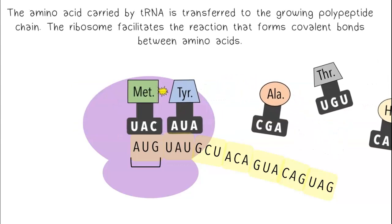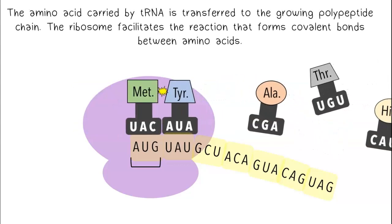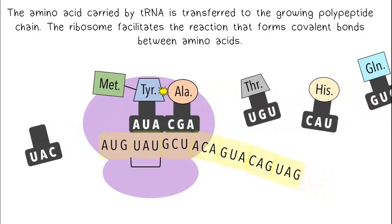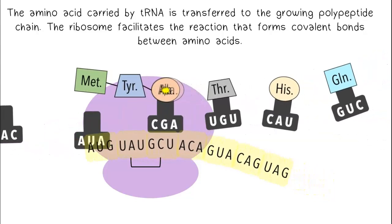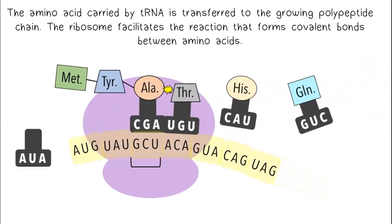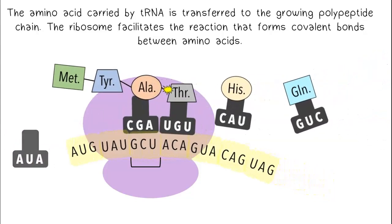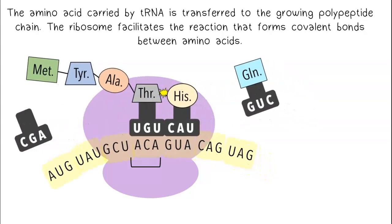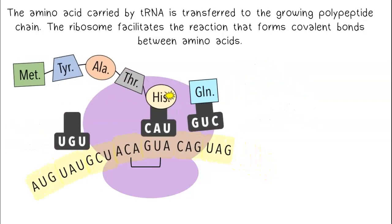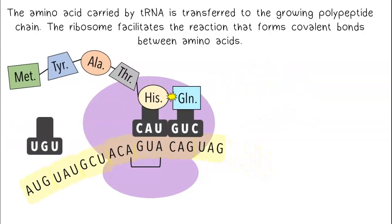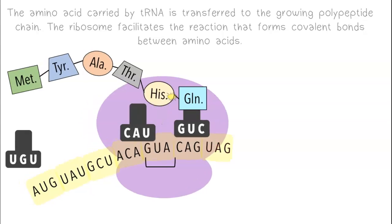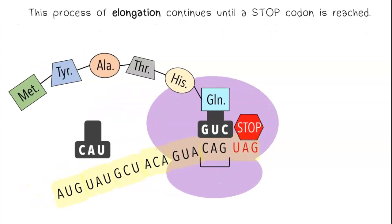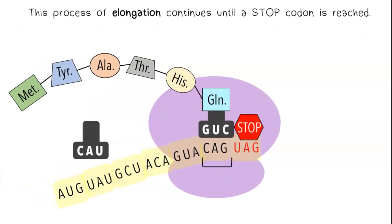The amino acid carried by tRNA is transferred to the growing polypeptide chain. The ribosome facilitates the reaction that forms covalent bonds between amino acids. This process of elongation continues until a stop codon is reached.